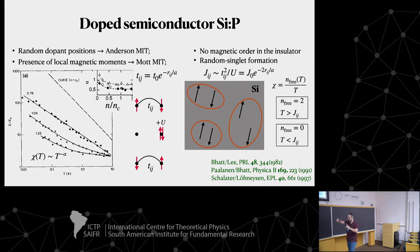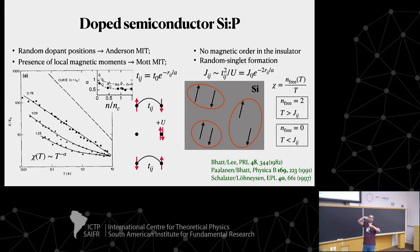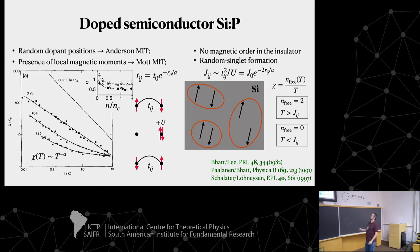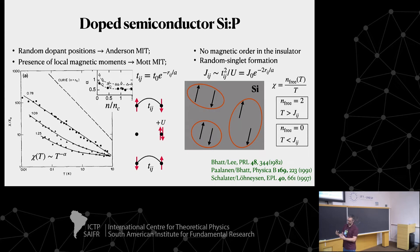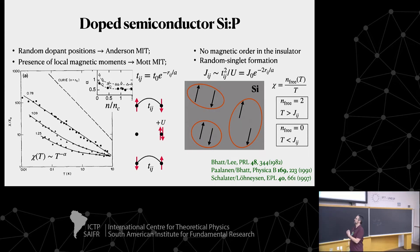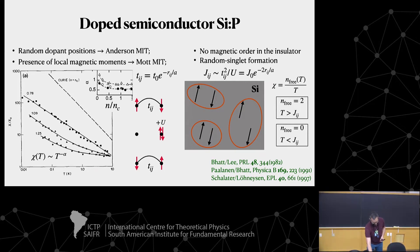The pairing is random because the positions are random. The response of the system looks like you have free spins: if the temperature is larger than the coupling J, the spins are free because the singlet is broken; if T is smaller than J, they are locked in the singlet and do not contribute to the susceptibility. By playing this game, Bhatt and Lee proposed the random singlet phase, which explains this behavior in the insulator. We want to see how this picture carries over into the metallic phase — that's essentially how the interplay comes about.